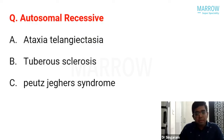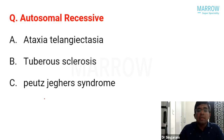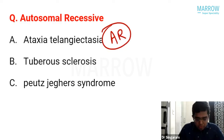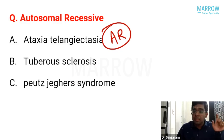Second inheritance question: which has autosomal recessive inheritance? Options were ataxia-telangiectasia, tuberous sclerosis, and Peutz-Jeghers syndrome. The answer is ataxia-telangiectasia, which is autosomal recessive. Please keep a comprehensive list of conditions organized by inheritance pattern — autosomal dominant, autosomal recessive, X-linked, and mitochondrial — and review it the day before the exam.